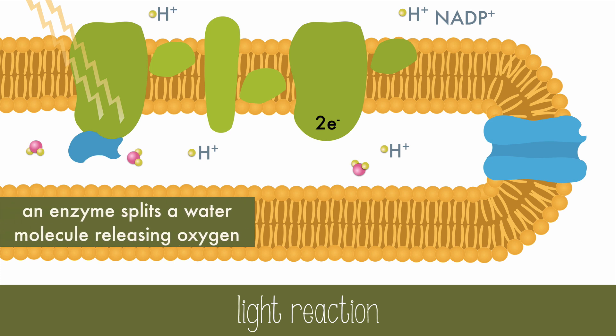An enzyme then splits a water molecule, releasing oxygen, which diffuses out of the plant. Right now there's only one oxygen atom, but when another water molecule is split, two oxygen atoms will form O2. The hydrogen ions that are produced are left in the thylakoid space.